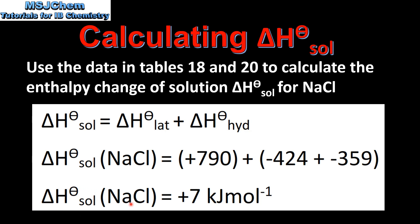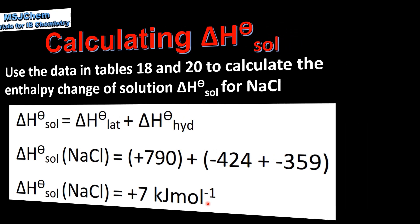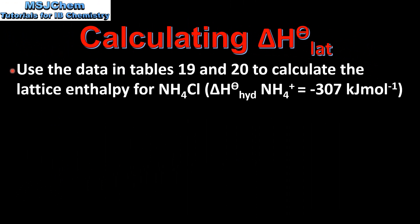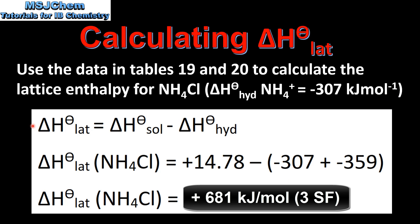That gives us an enthalpy change of solution for sodium chloride of +7 kJ/mol. In our next example we'll use the data in tables 19 and 20 to calculate the lattice enthalpy for ammonium chloride. By rearranging the equation, lattice enthalpy equals the enthalpy change of solution minus the enthalpy change of hydration. The enthalpy change of solution of ammonium chloride is +14.78 kJ/mol, the enthalpy change of hydration for the ammonium ion is −307 kJ/mol, and for the chloride ion is −359 kJ/mol. That gives a lattice enthalpy for ammonium chloride of +680 kJ/mol.